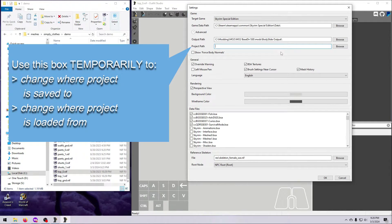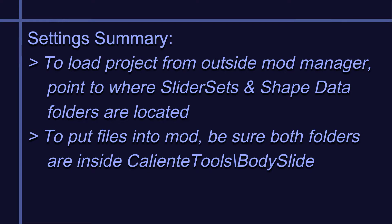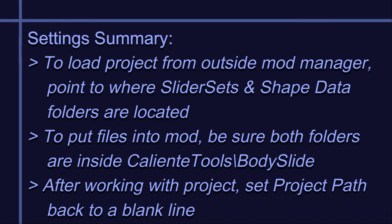So that's how you can manage the project files directly through Outfit Studio or BodySlide — don't forget that the settings you change in that window will apply to both applications. Remember these key points: if you want to load files from outside your Mod Manager, be sure to point the project path in Settings to wherever the slider sets and shape data folders are located. To put those into a mod, be sure they end up inside the CalienteTools slash BodySlide folder. If you change the project path, be sure to change it back — meaning make sure it's blank again — when you are done.